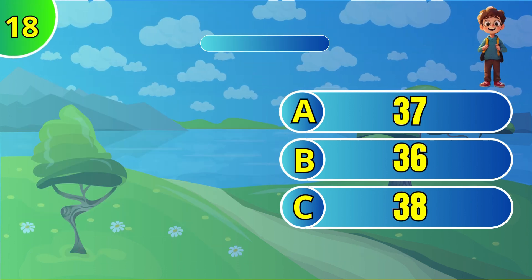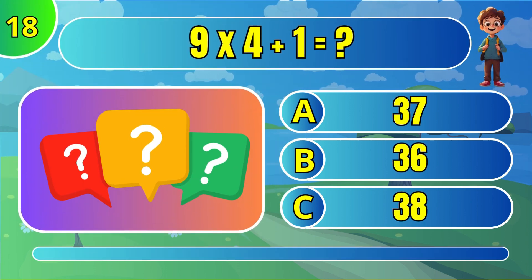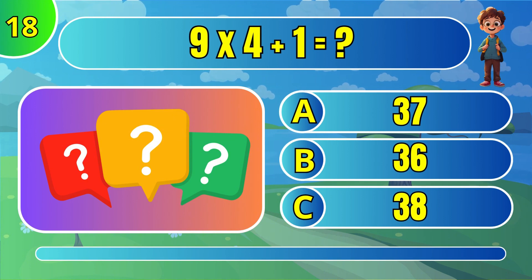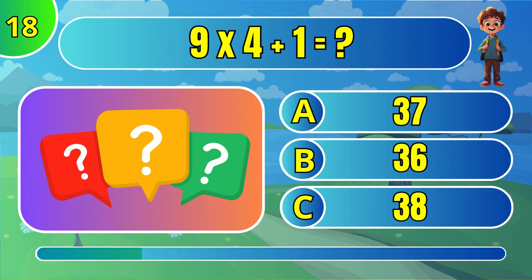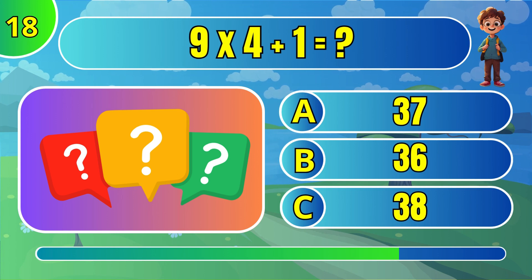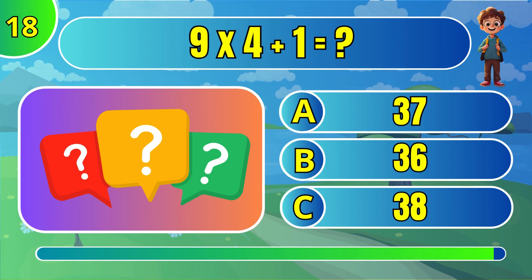What is 9 times 4 plus 1? The answer is A: 37.